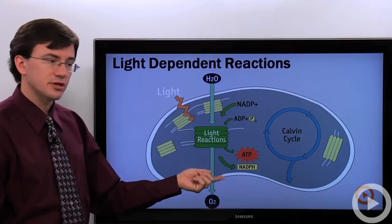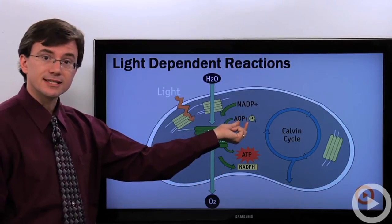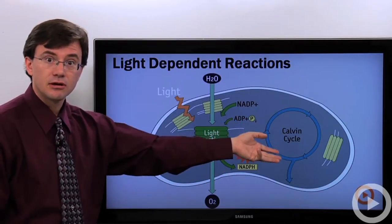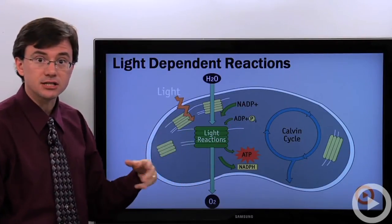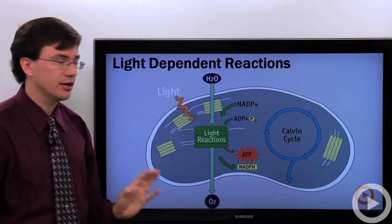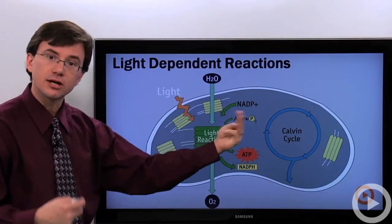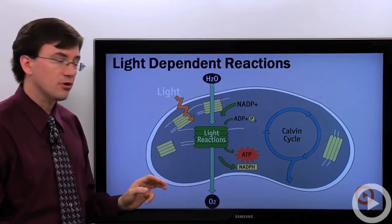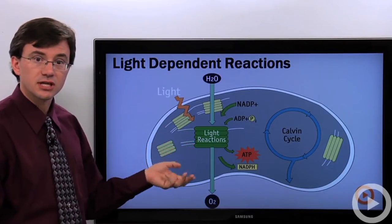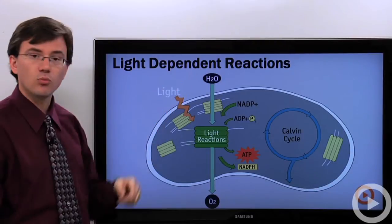Where does it get the building materials for this? Well, you get adenosine diphosphate and phosphate ions that have been used up by the Calvin cycle, as well as NADP positive empty electron carriers that also have been used up by the Calvin cycle. Ultimately, oxygen gas is kicked out as a waste product of the light-dependent reactions. The oxygen came from water.